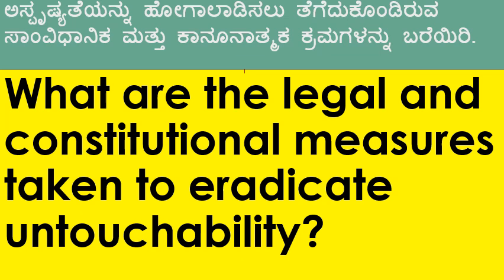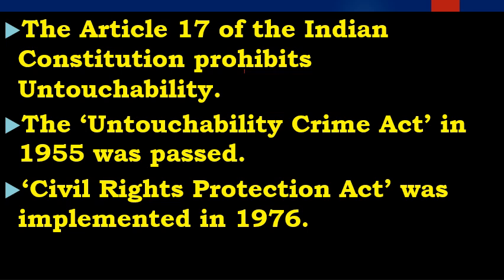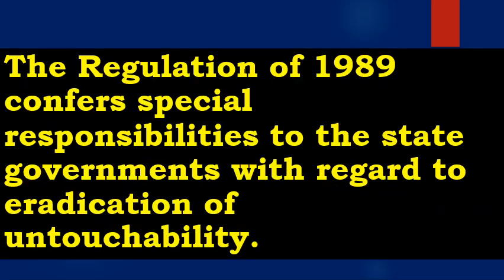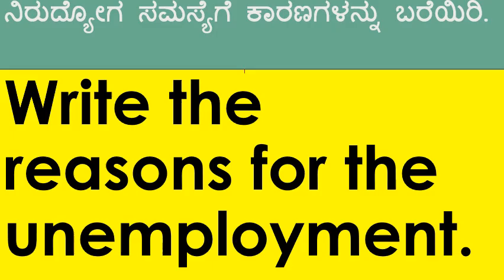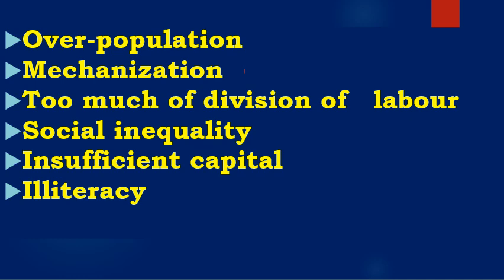What are the legal and constitutional measures taken to eradicate untouchability? Very important and quite often asked question. Write the reasons for unemployment: overpopulation, mechanization, too much division of labor, social inequality, insufficient capital and illiteracy.